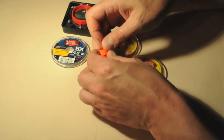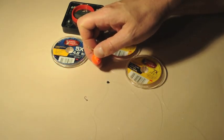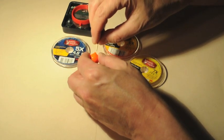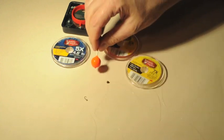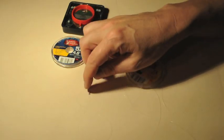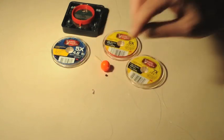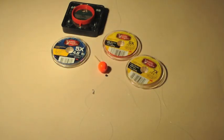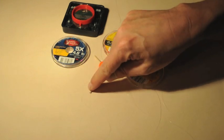You slide it up the leader before you tie the fly on, and then you push in the toothpick to lock it in place. That's a rig I would use for fishing the nymph that imitates midge larva or pupa, fishing it deep down along the bottom of a river.